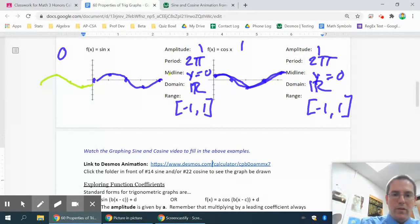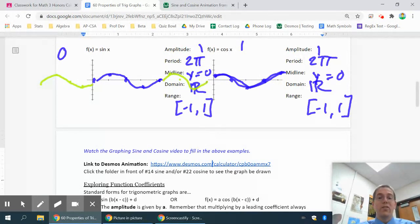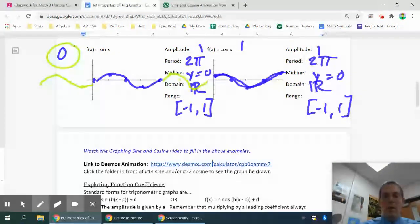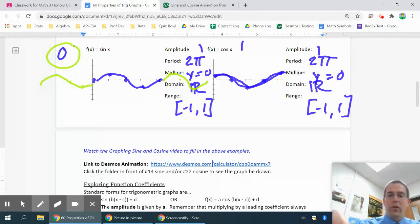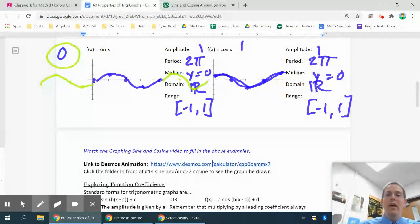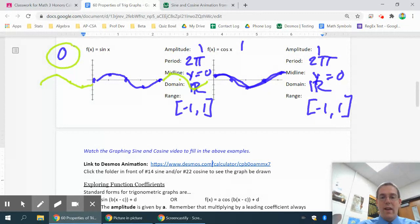One other thing worth mentioning: the only difference between sine and cosine is the starting value. Sine always starts at the origin with a value of 0. Cosine starts generally with positive 1, unless it's reflected by putting a negative in front, then it would go to negative 1. The starting location is the only difference—it's the same 0, 1, 0, negative 1, 0 pattern eventually for either one of them.